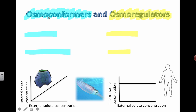We have 'osmo' as a prefix, so we know it has something to do with water. 'Conformer' or 'regulator' is the idea that you are either trying to keep everything the same as your surroundings, or you're trying to create your own special internal situation — which involves some kind of homeostasis. So an osmoregulator maintains water and solute balances independent of whatever is outside.